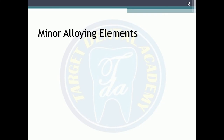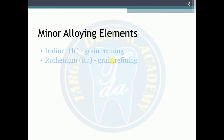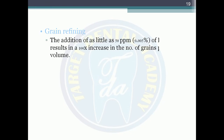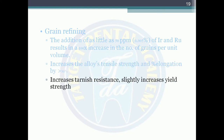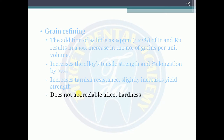Minor alloying elements for grain refining include iridium and ruthenium. The addition of as little as 50 ppm (0.005%) of iridium or ruthenium results in a 100% increase in the number of grains per unit volume. This increases the alloy's tensile strength and percent elongation by more than 30%, slightly increases tarnish resistance and yield strength, but does not appreciably alter hardness.